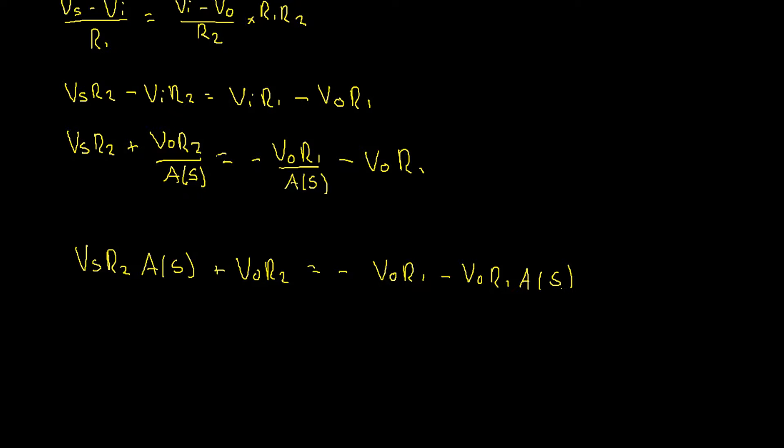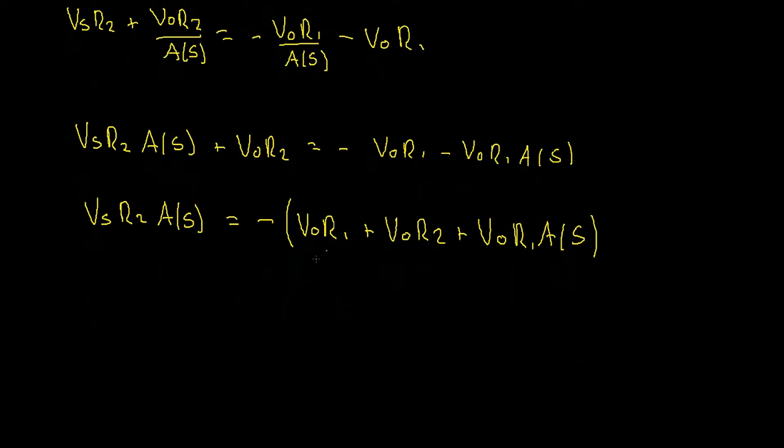Now you might be thinking it's a bit messy but don't worry, this is still all pretty simple algebra. We're just rearranging for now and then we're going to substitute in that equation for A(s) which will also require a little bit extra algebra. Now let's remove those denominators by multiplying through by A(s) which gives us vs r2 A(s) plus vo r2 equals negative vo r1 minus vo r1 A(s). So I'm starting to feel better about it, the equation is starting to look a little less messy.